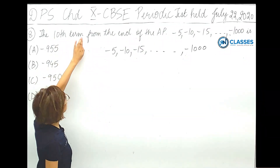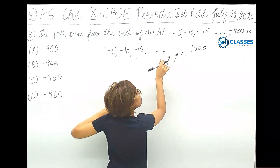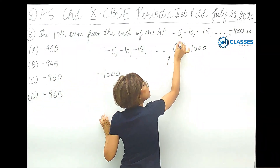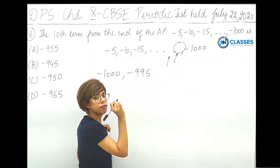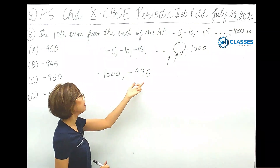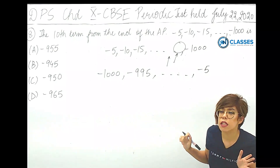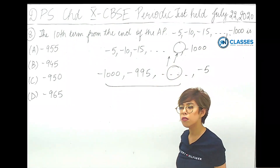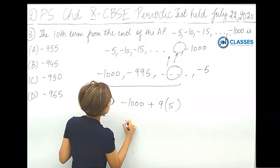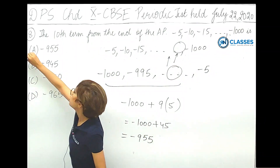The next question: find the 10th term from the end of the AP. If we reverse the AP, the last term becomes the first term, which is minus 1000, and the common difference becomes positive 5. The 10th term from the end is then a plus 9d, which is minus 1000 plus 9 into 5, equals minus 1000 plus 45, equals minus 955. Option A is correct.